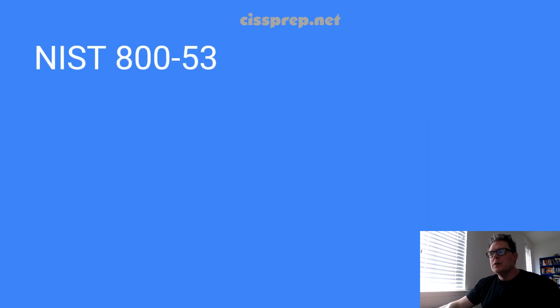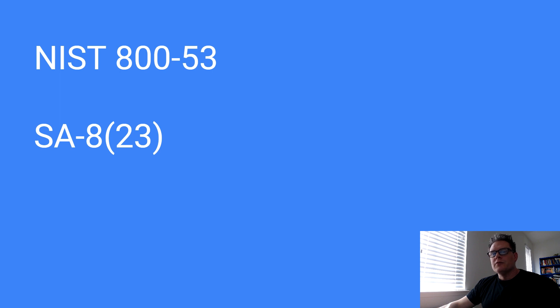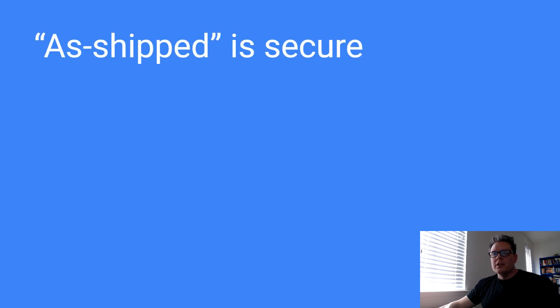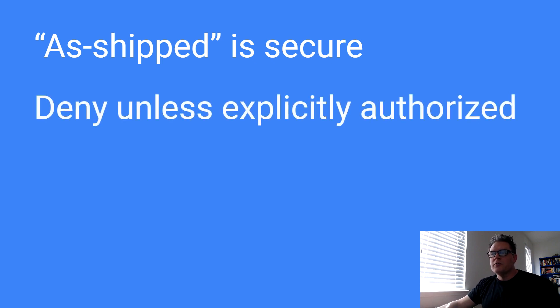The term comes from NIST 853, control number SA-8, sub-control number 23. Secure defaults and restrictive defaults are basically the same thing. The principle asserts that any product as shipped is secure by default, and the mechanism by which this is achieved is by applying a deny-all or deny-unless-explicitly-authorized philosophy.